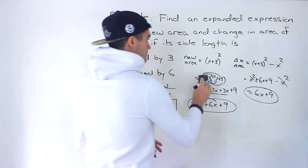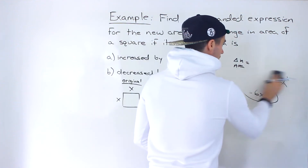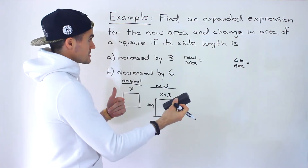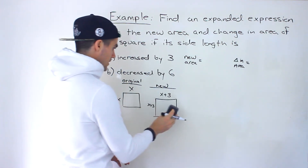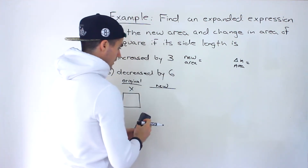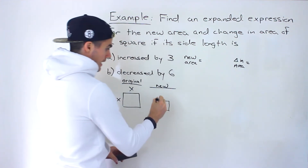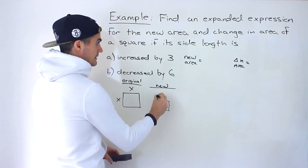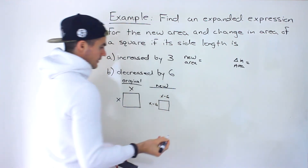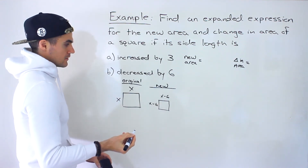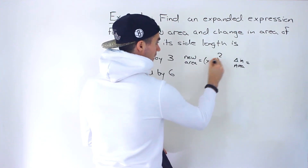Those are the answers for part a. Now for part b, instead of increasing the side length we're told it's decreased by six, so it's going to be a smaller square. Let's draw a smaller square here — the side length is now x minus six. The same approach applies, we're just dealing with a negative now.